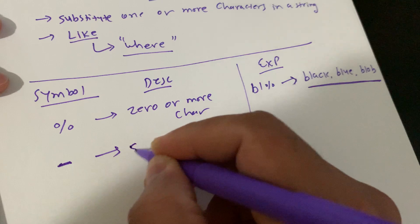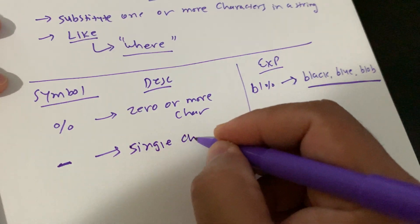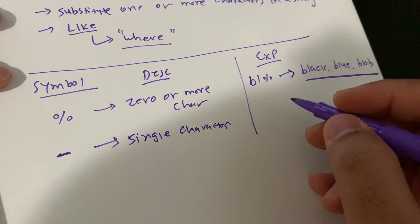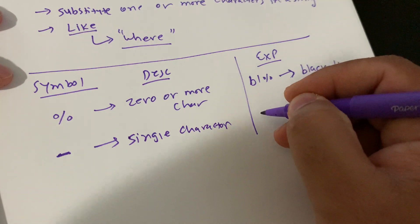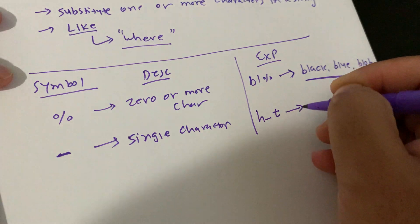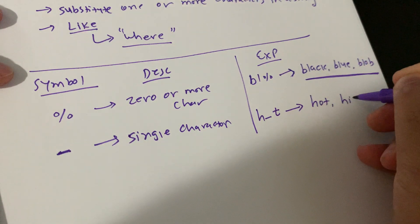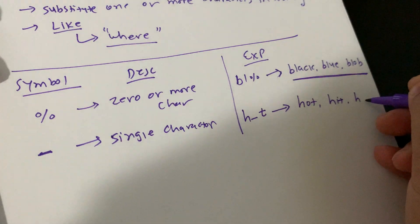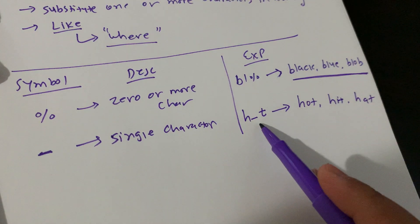The next wildcard symbol is the underscore (_), which represents a single character. For example, H_T would return words like 'hot', 'hit', 'hat' — any word where there is exactly one character in between H and T.